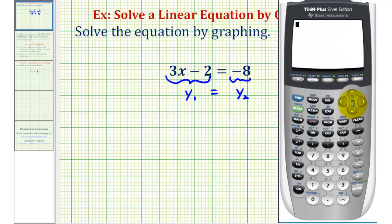So from the home screen, we'll press y equals and type our linear equations in. So y1 will have 3x minus 2, enter, and then y2 is negative 8. Be careful not to enter minus 8. And now to make sure we have the standard window, let's go ahead and press zoom 6.